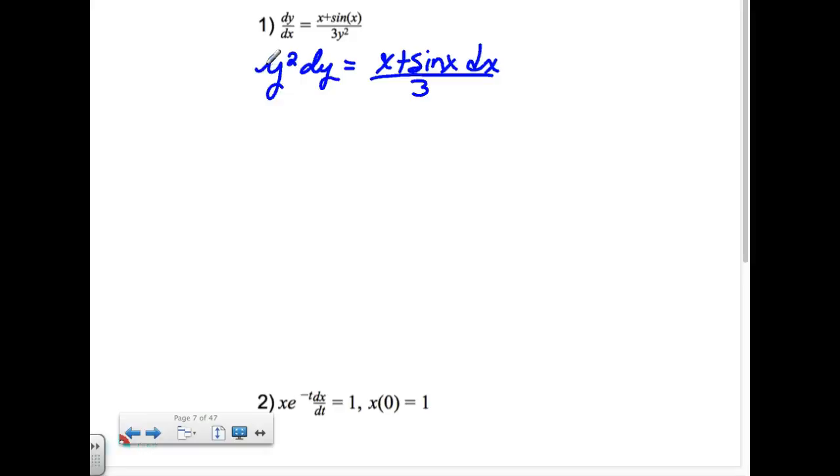So I'm going to do y squared dy, move it over by multiplying, equals x plus sine x dx over 3. I'm going to leave the 3 over on the right because it's got to move anyway. So next step, what do I do after I separate? Exactly. So we're going to integrate. So let's go integrate both sides. I'm just going to throw it right here. They'll be easy antiderivatives.